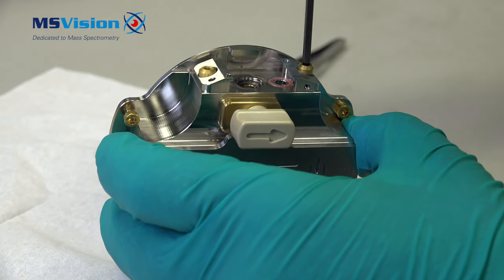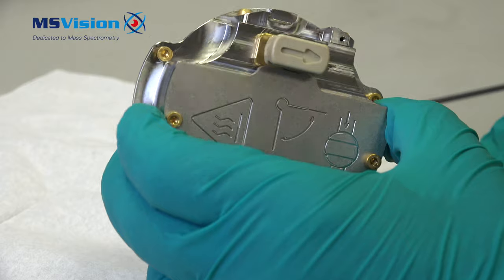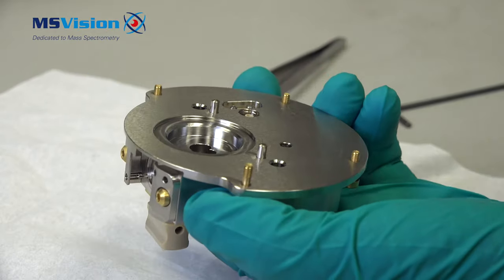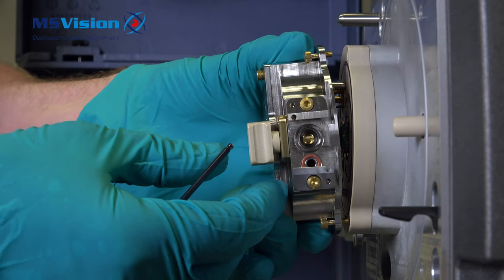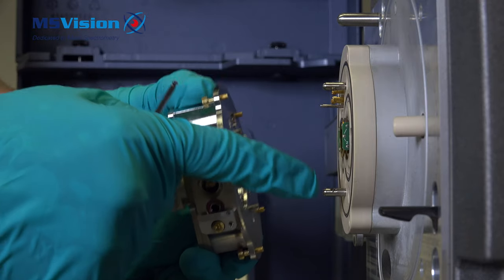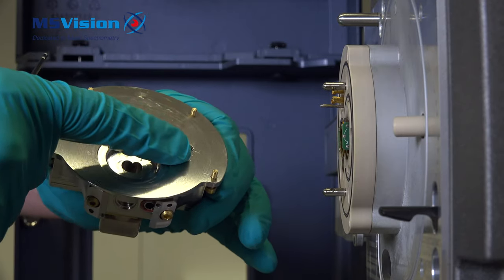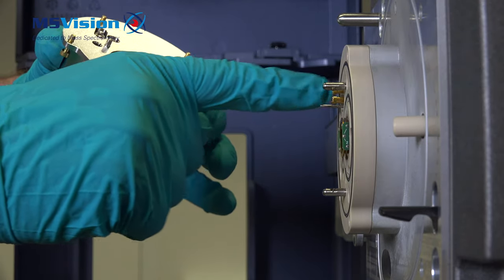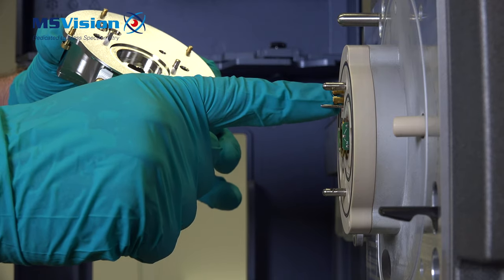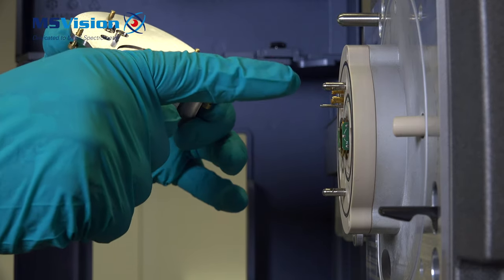Now it's fully reassembled we can put it back on the instrument. Align all the holes. These pins are for alignment. Here these are electrical feed-throughs for the heater and for the temperature sensor and cone voltage, there's a temperature sensor.